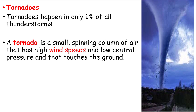Tornadoes happen in only one percent of all thunderstorms. A tornado is a small, spinning cloud of air that has high wind speed and low central pressure and that touches the ground. There is very high wind speed at that point and here at the bottom.